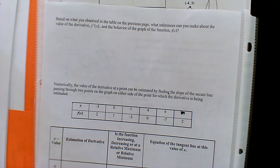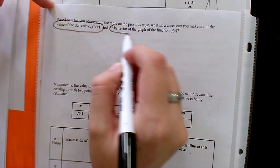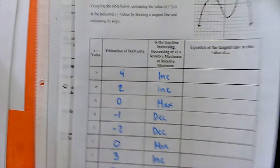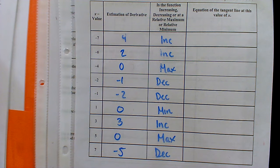Go ahead and flip to the next page. At the top it says: what inferences can you make — what conclusions or relationships can you make about the value of the derivative, a.k.a. the slope, and the behavior of the graph? You may have to do some flipping because we're going to reference the table from yesterday. Take a second and look at those two first columns and try to find a connection or relationship between them.